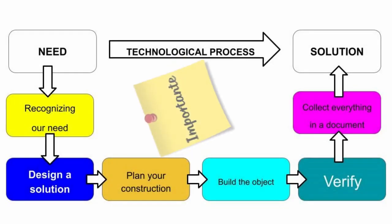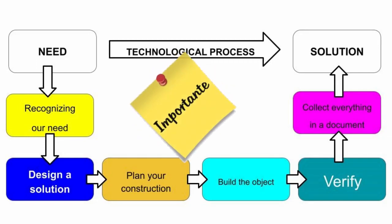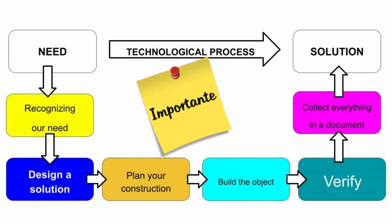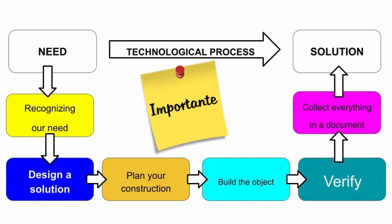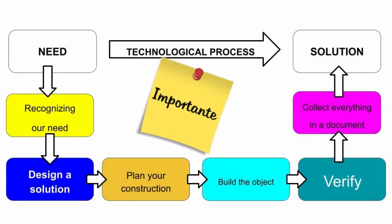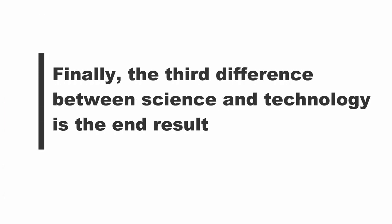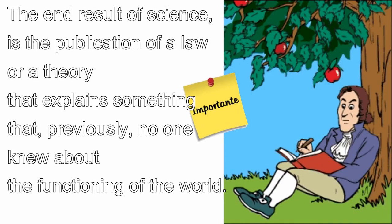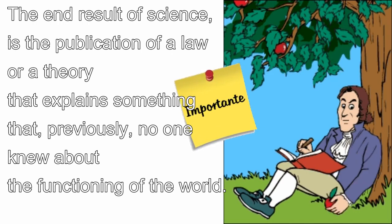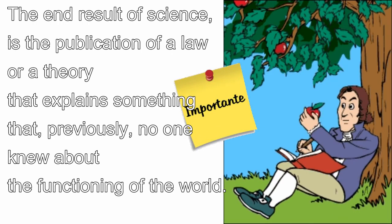In technology, we use the technological process, which consists of several steps that will be explained in another video. And finally, the third difference between science and technology is the end result. The end result of science — what a scientist tries to achieve — is the publication of a law or a theory in a simple article.